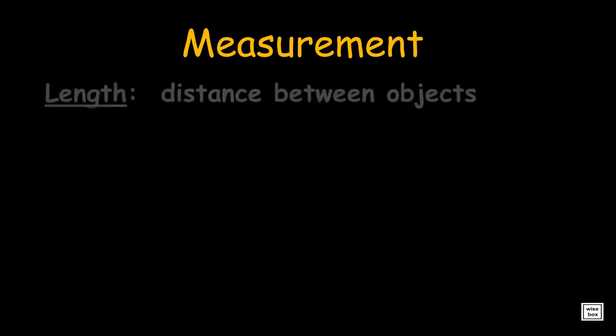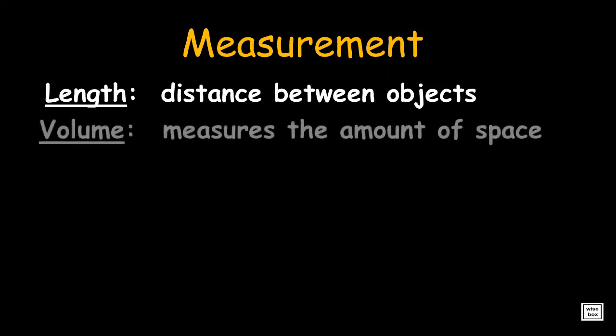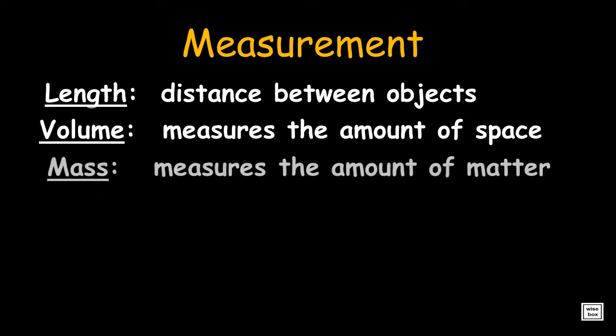The basic types of measurement are Length, which measures distance between objects, Volume, which measures the amount of space something takes up, and Mass, which measures the amount of matter in an object.